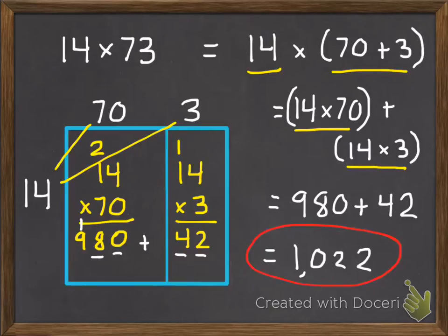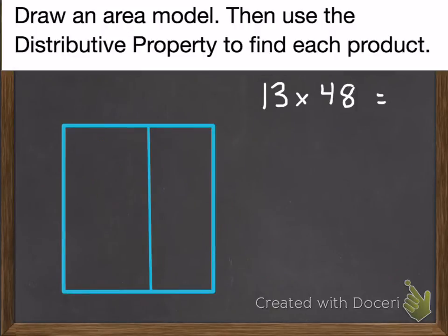So that was my first example of 2 digit by 2 digit. Here's my second, 13 times 48. So once again, I need to draw an area model. Then I'm going to use the distributive property to find each product. And for this assignment, you are going to need to write down all these steps on the right, as well as drawing the area model.